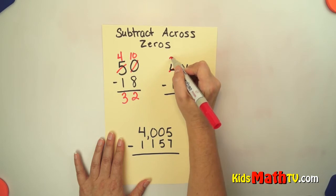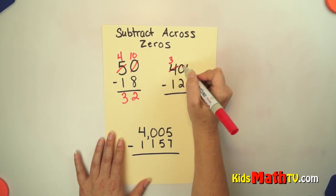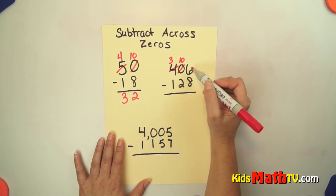So I'm going to borrow from the hundreds, that becomes 3. And this now becomes 10. But I still cannot take 8 away from 6, so I need to still borrow.